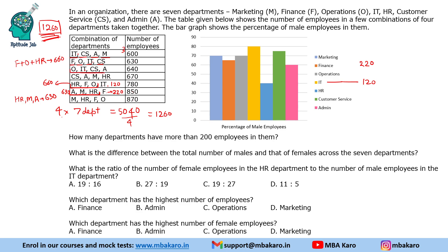Taking the next set - operations, IT, CS, and admin - the remaining departments are finance, marketing, and HR. Their total should be 620. Looking at the last combination, finance, marketing, and HR total 620, and that combination equals 870. So operations will have 250 employees.